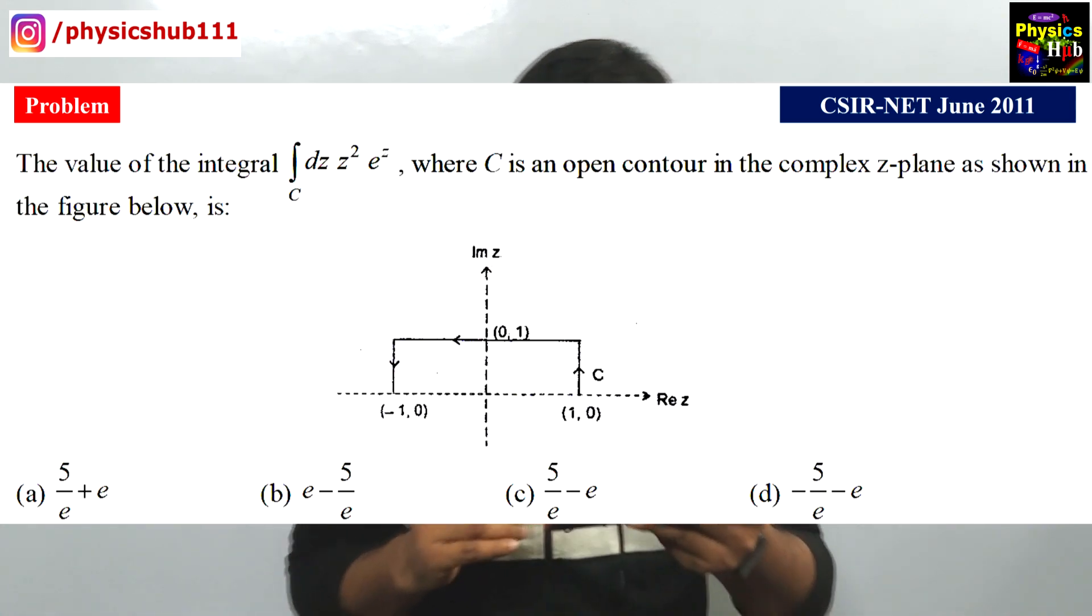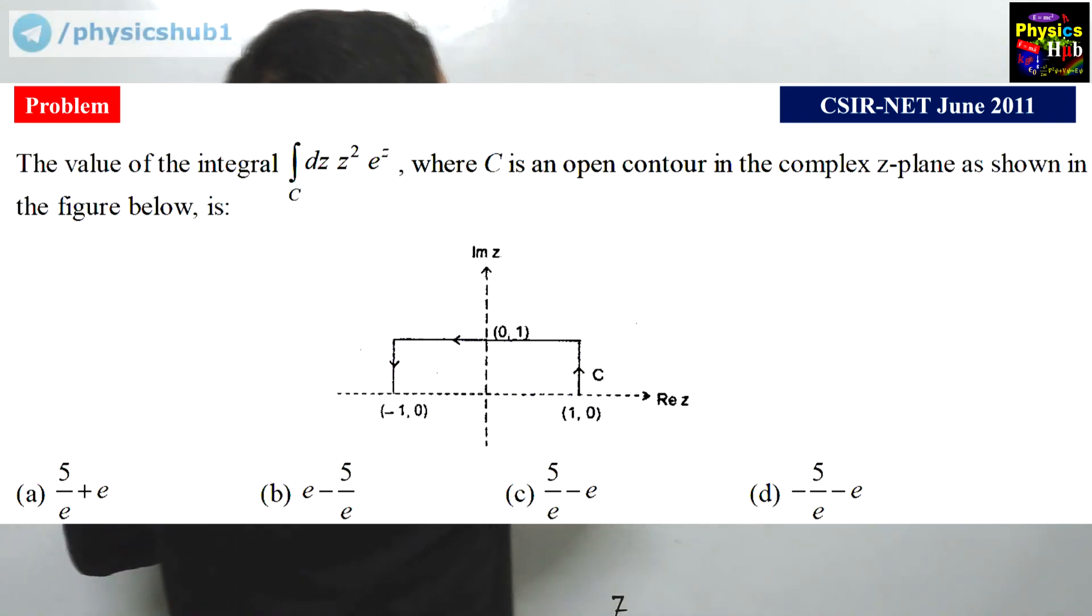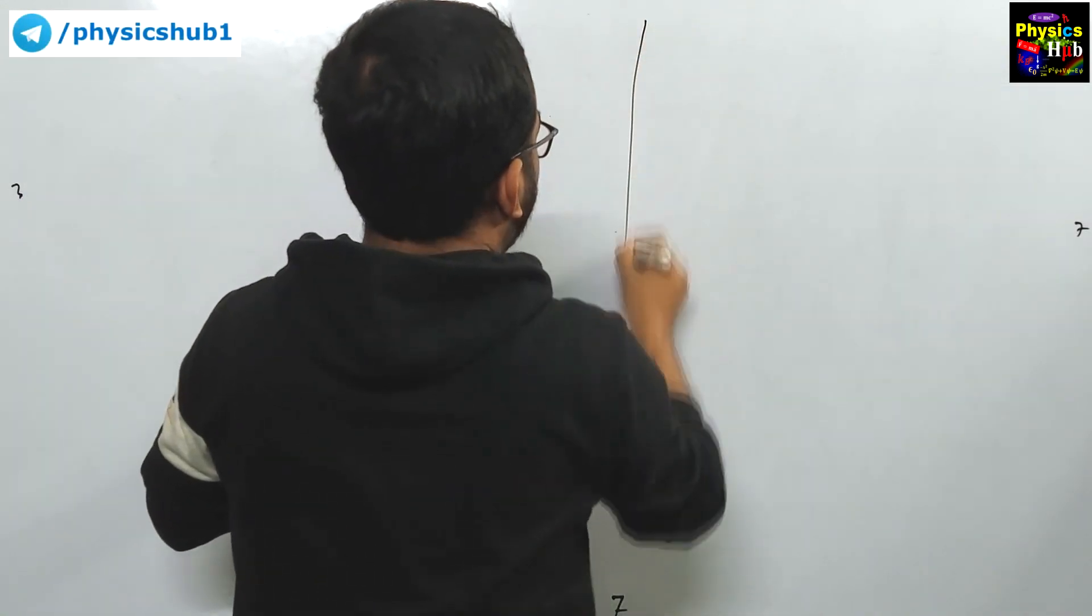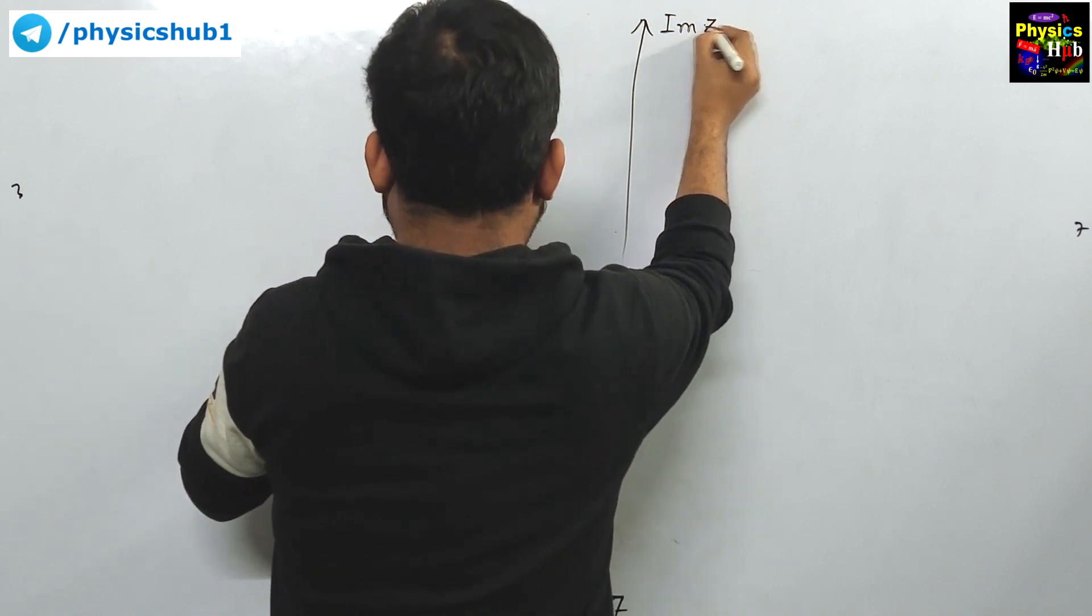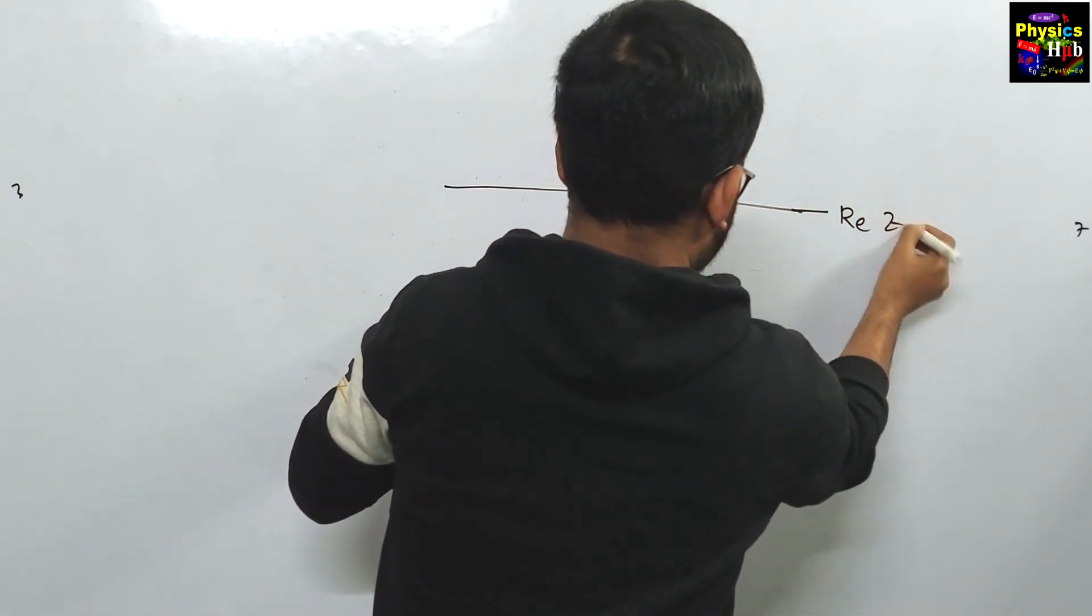You can see the figure. You have to find out the contour integral. Let me just draw it for you. This is the imaginary axis, Im z, and this is the real axis, Re z.